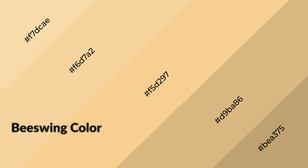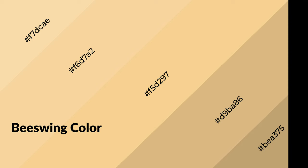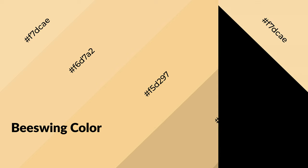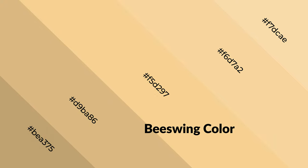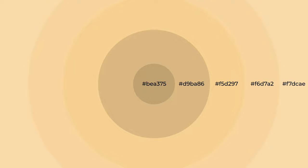Beeswing is a warm color and it emits cozier and active emotions. Warm colors are symbols of warmth, fire, heat, and sunshine. It also evokes joy, passion, love, and even anger. You can see warm colors used in restaurants and gyms.